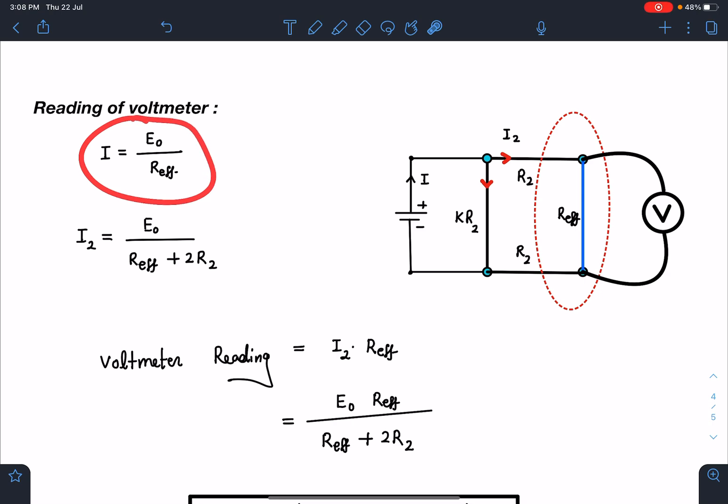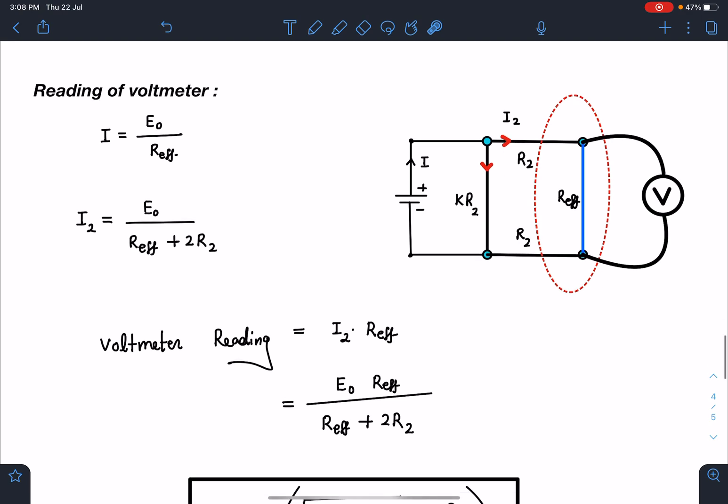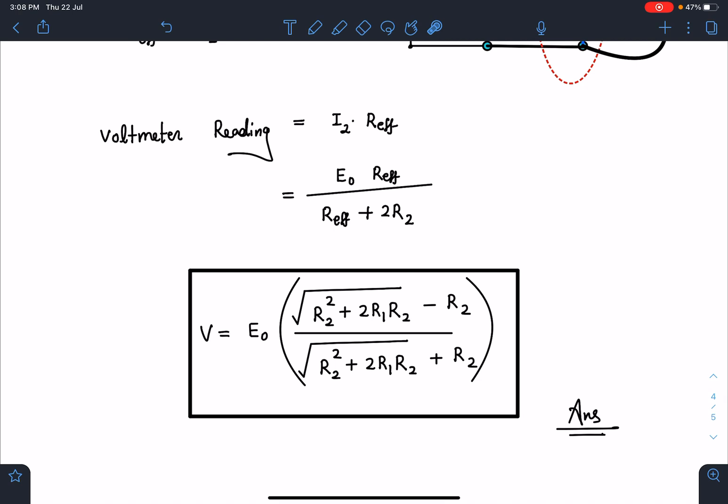Reading is going to be current times R effective here, across this resistance. If I substitute the value of current, it will become E0 R effective by R effective plus 2R2. Now if I substitute the final values of R effective here, I am going to get this potential difference as E0 times root of R2 square plus 2R1R2 minus R2 divided by root of R2 square plus 2R1R2 plus R2. This is going to be the final answer for this problem.